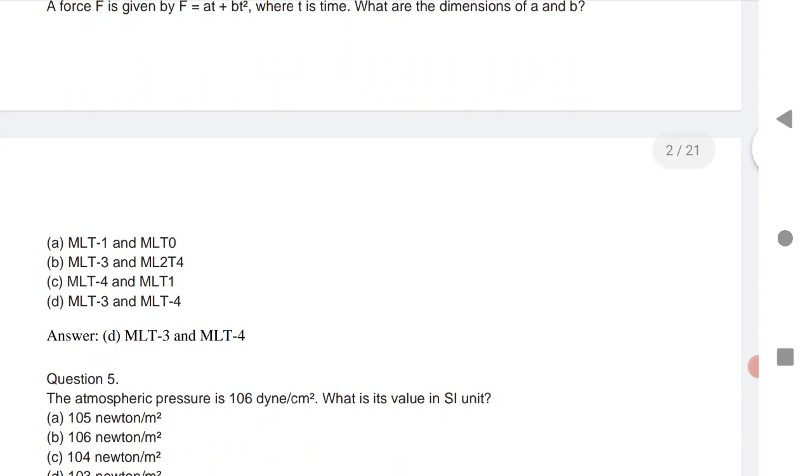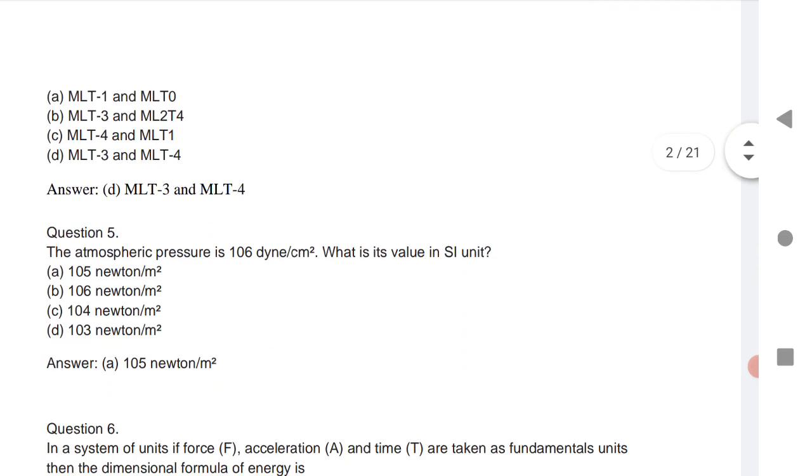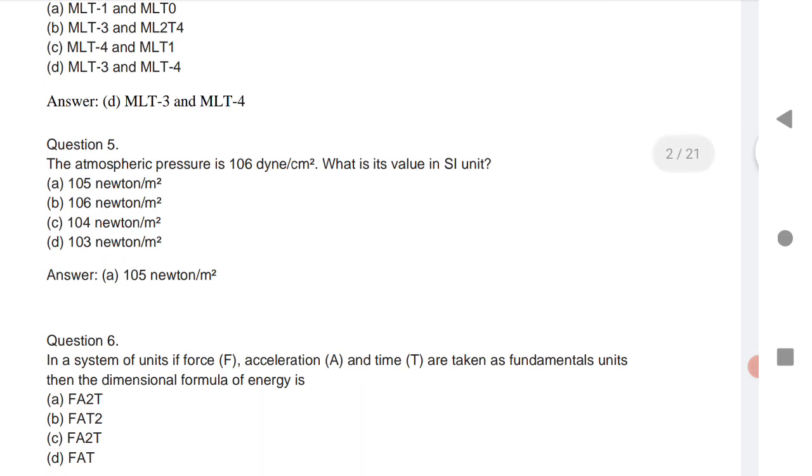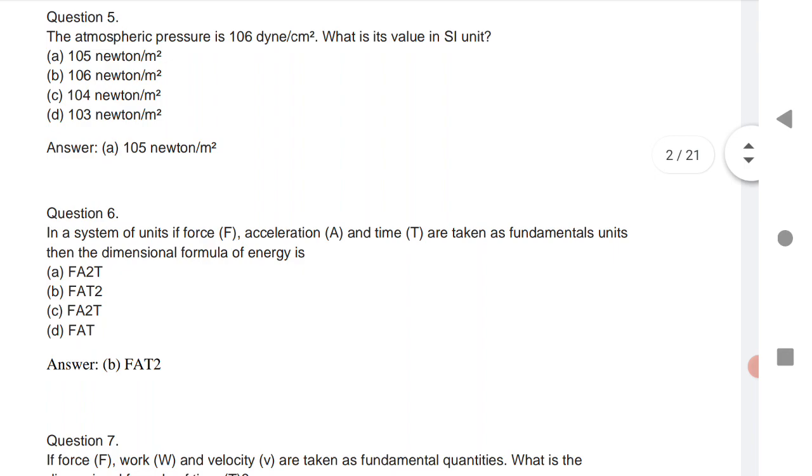Next is the atmospheric pressure is 10^6. And what is its value in SI units? So 10^6, the value in SI units is 10^5 N per meter square.